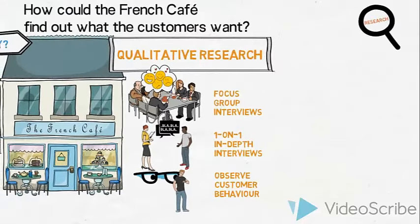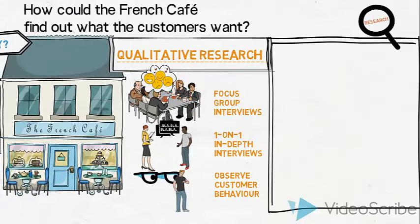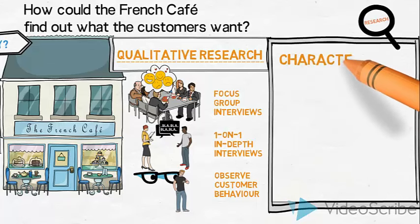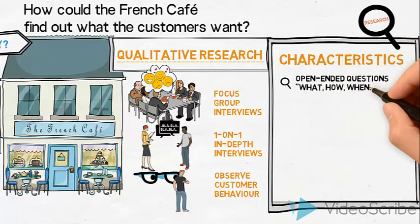We call these types of research qualitative research. Now let us list the characteristics of qualitative data. Qualitative data is based on asking open-ended questions such as what, how, when and so on, so that the respondents can express themselves using their own words.